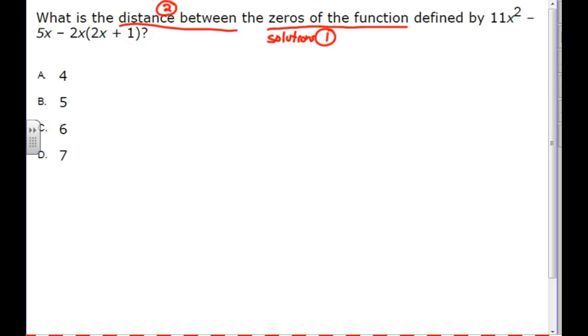To find the distance between any two numbers, it's the same as finding the difference. And when we do that, we take the highest minus the lowest.